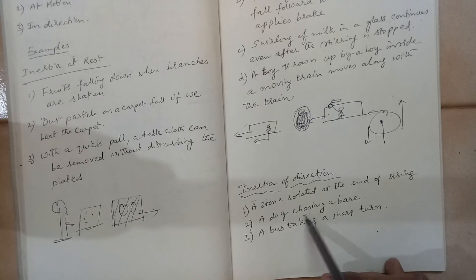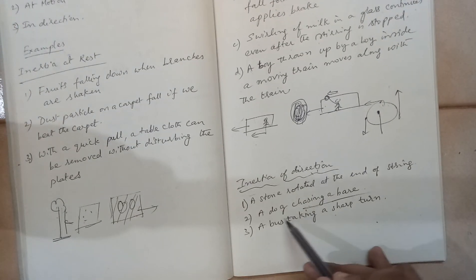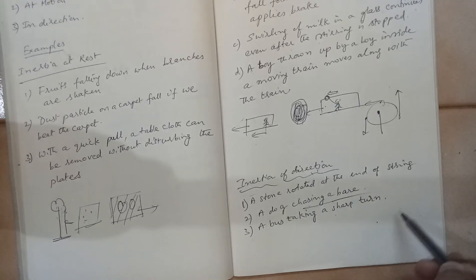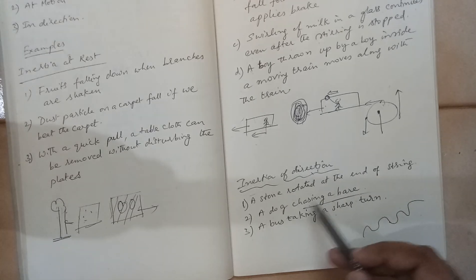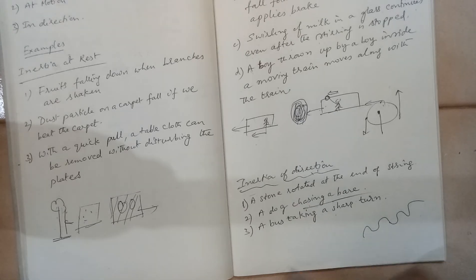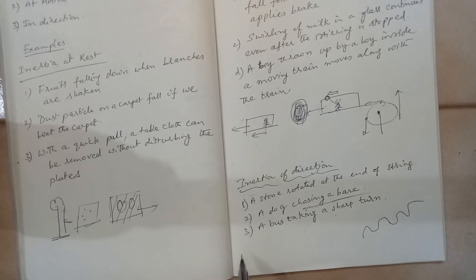Another example is a dog chasing a hare. A dog finds it difficult to chase a hare because the hare can easily change its direction, but a dog cannot. A dog has greater inertia in terms of direction, so it finds it difficult to chase a hare.